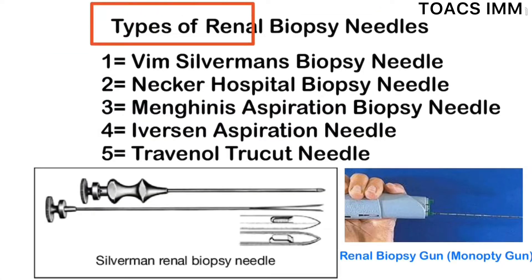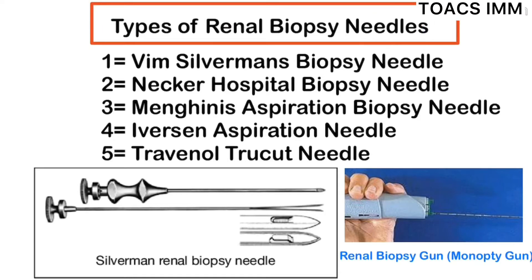Types of renal biopsy needles are: number one, Wayne Silverman biopsy needle; number two, Necker hospital biopsy needle; number three, Manganese aspiration biopsy needle; number four, Everson aspiration needle; and number five, Clavinol through-cut needle. The most common needle used in hospital setup is the Silverman renal biopsy needle. Nowadays, the renal biopsy gun, also called a monoptic gun, is most commonly used.